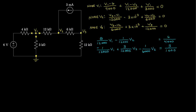For the node 3 equation: there are no V1 terms. For V2, we have negative 1/6,000. For V3, we have 1/6,000 plus 1/12,000, which is 2/12,000 plus 1/12,000 = 3/12,000 times V3. That equals negative 3/1,000 (the 3 milliamps moved to the other side with a negative sign). So now we have it in a more structured form.